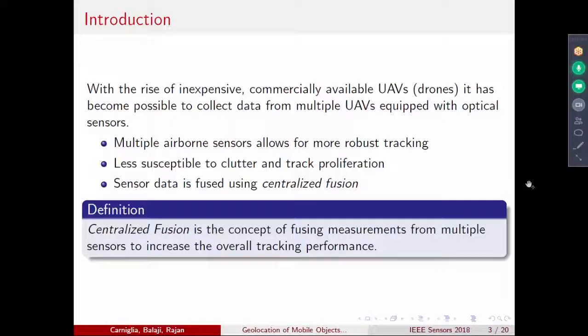In optical sensors also, you need clutter suppression, but the signal processing used is very less computationally intensive. Since we are going to use multiple UAVs, we have multiple sensors giving out data, and we're going to fuse the sensors using a centralized fusion idea. Centralized fusion is fusing the measurements from multiple sensors at one point or in one area to increase the overall tracking performance instead of each sensor doing its own processing. It's all sent to a centralized processor which does the fusion.